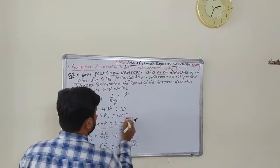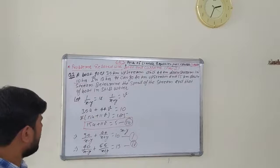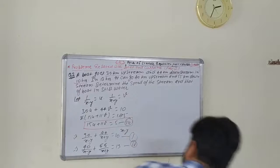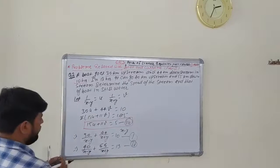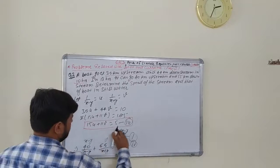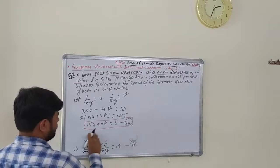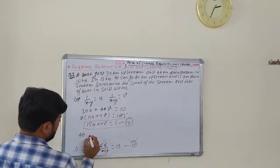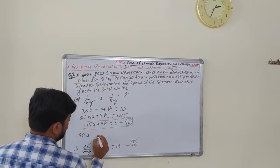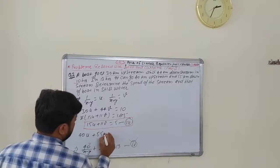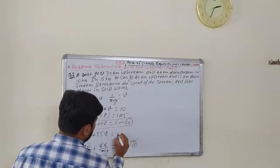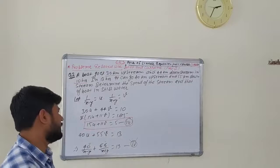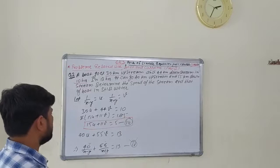The fourth equation from the second condition: 40u + 55v = 13. Now we will use elimination method. Multiply third equation by 5 and the fourth equation by 2 to eliminate v.